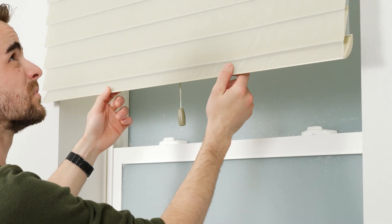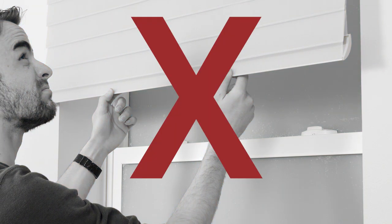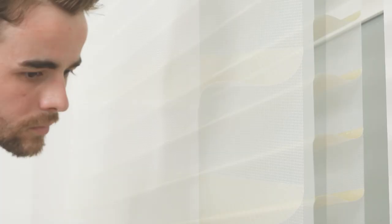You always want to use the tassel to move the shade. Don't try to open and close it with the bottom rail. Another thing to remember about operating your sheer shade is that the slats in between the sheer fabric won't open unless the shade is pulled completely down. When you raise the shade, the slats close automatically.